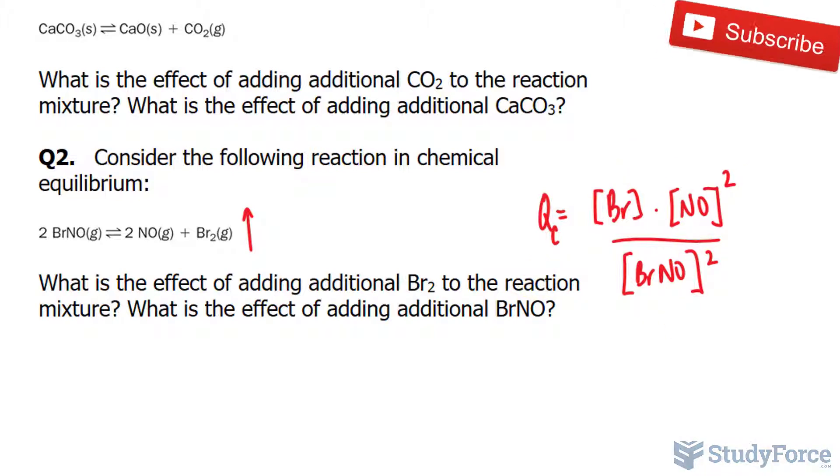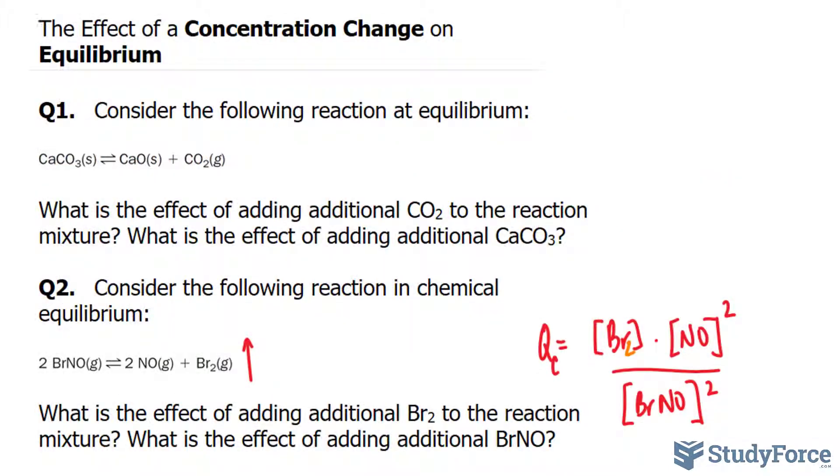And just think of it this way. If I were to apply a number in for Br2, setting all of them equal to one, if you like, to begin with, if I were to increase Br2, QC would get higher. And if QC is larger than K, the reaction goes to the left.